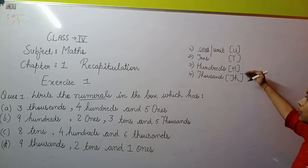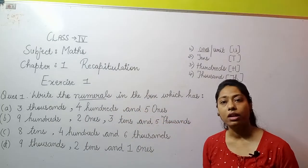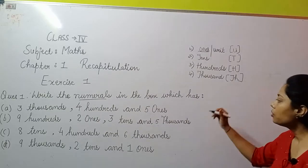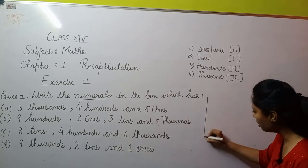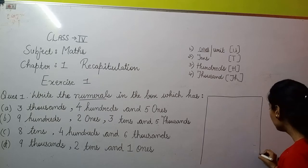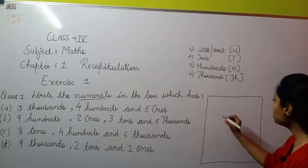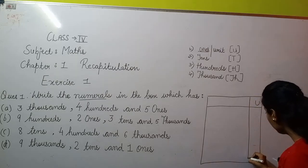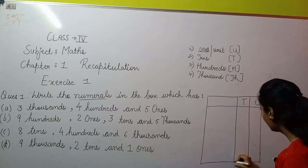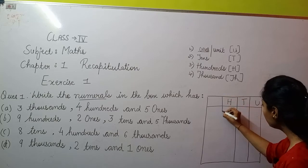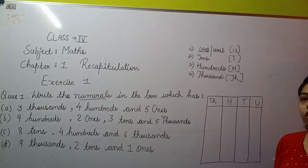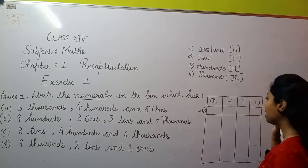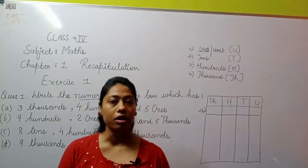Yahaan se humne saare place values dekh liye. Now for Question number 1, let us make a box. Is box mein hum log saari place values likhne waale hain — TH, H, T, U. Copy mein bhi jab aap yeh karenge toh box ke format mein karenge. Last mein aata hai unit place, uske baad 10s, 100s, aur 1000s place.